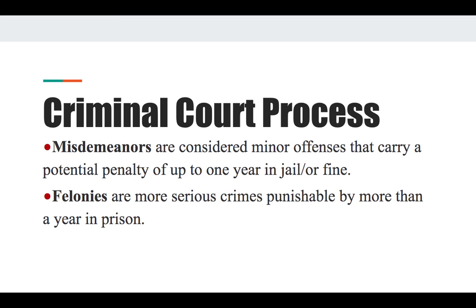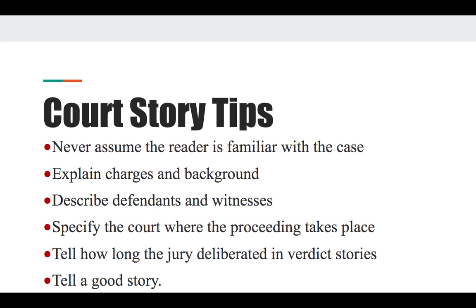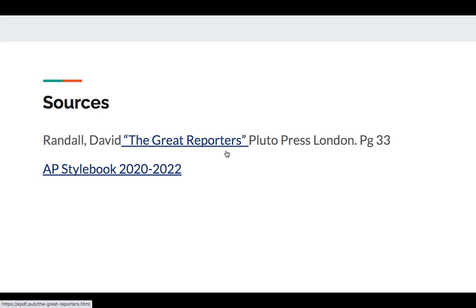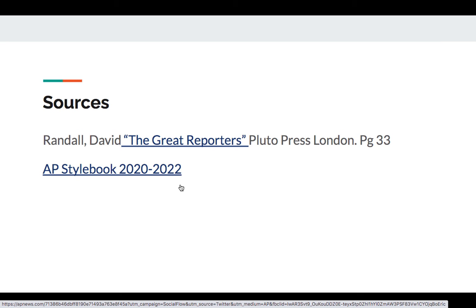Misdemeanors are minor offenses carrying a potential penalty of up to one year in jail; felonies are more serious crimes punishable by more than one year in prison. Court story tips: never assume the reader is familiar with the case — always explain the charges and background, describe defendants and witnesses, specify the court, and tell how long the jury deliberated in verdict stories. Tell a good story overall. Edna Buchanan is a great example of rearranging dense information into something inspiring. For further reference, see page 33 of 'The Great Reporters' and the updated AP Stylebook 2020–2022.